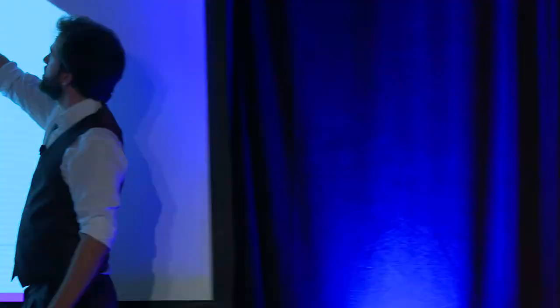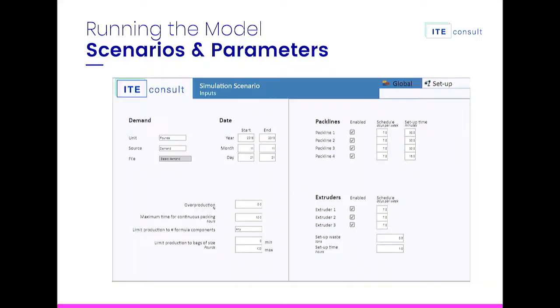Question: Did you have any machine breakdowns or unplanned downtime, and how did you consider that? Answer: This is a weekly schedule. What we do have is which packlines can be enabled and which days they will run. So if you know your plant is going to have a breakdown or a problem, you can run the optimizer with that packline excluded.